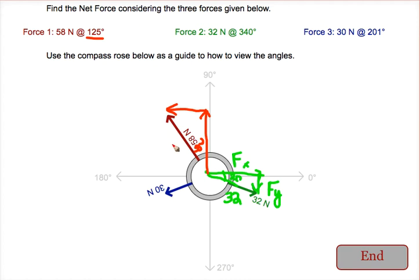We have 35 degrees and 58 for our hypotenuse. So again we find the force in the x and the force in the y. This time the x is heading to the left and the y is heading up.